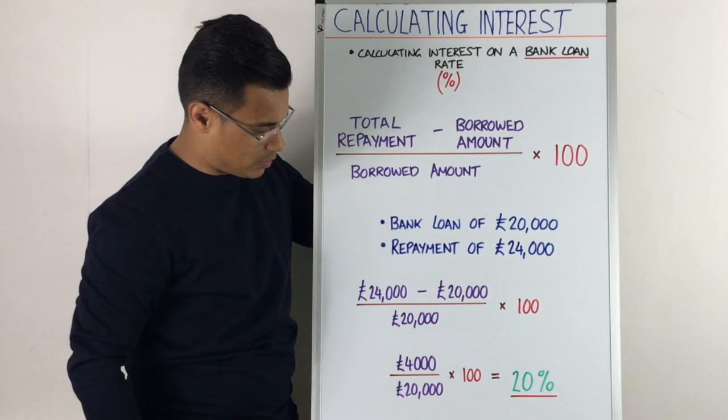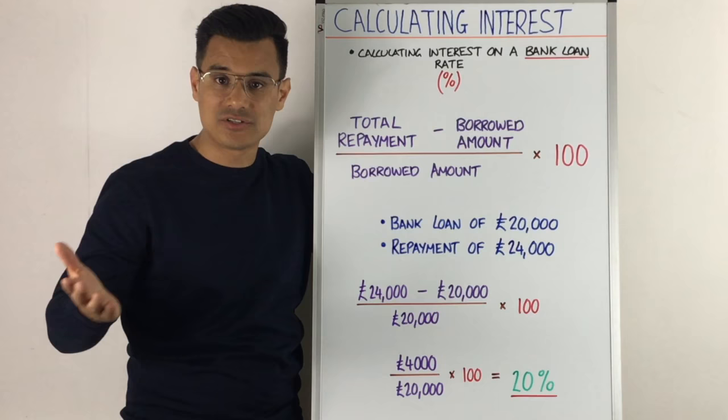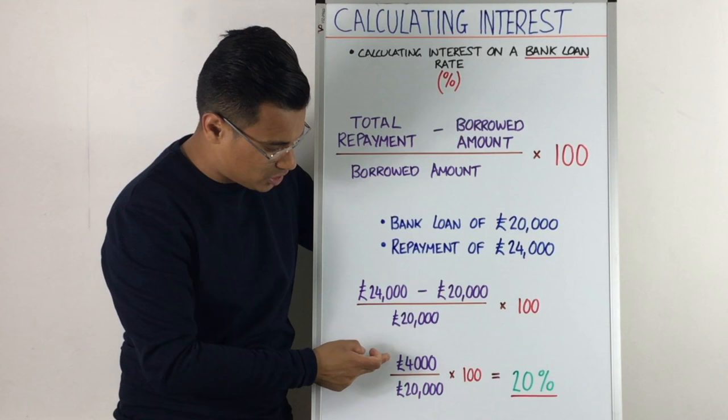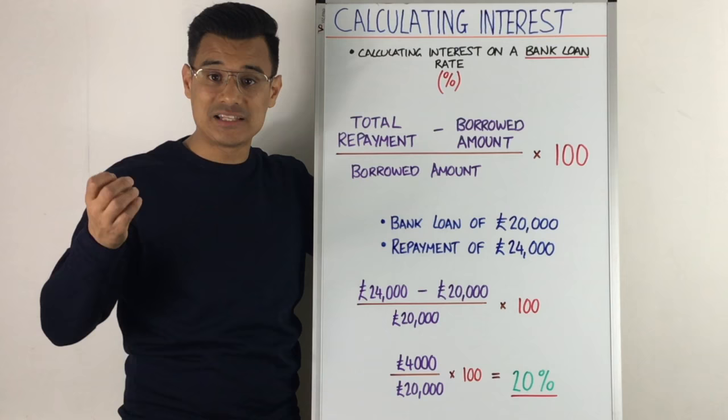Breaking it down: £24,000 minus £20,000 equals £4,000, which is the total interest you would have paid over the lifetime of the bank loan. But we're calculating the interest rate. So the interest rate is the total interest — £4,000 — divided by £20,000, times by 100, and that comes to 20%. So the interest rate is 20% that you've had to pay on this bank loan.